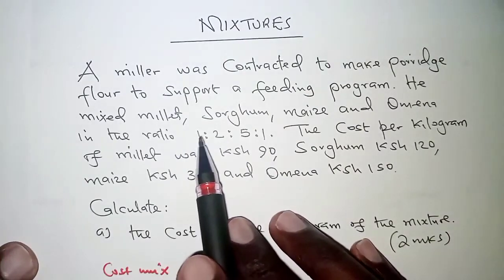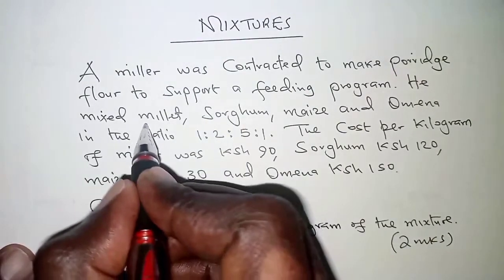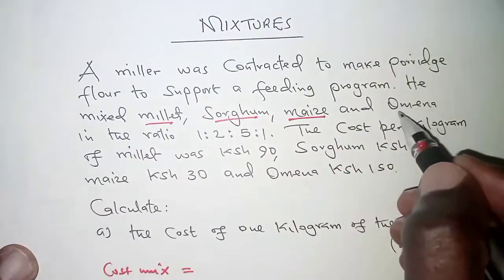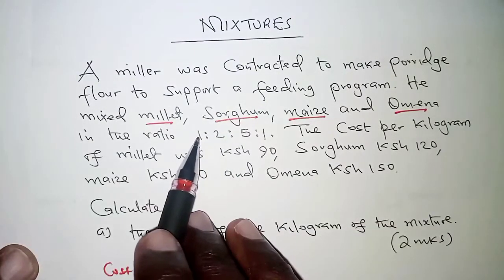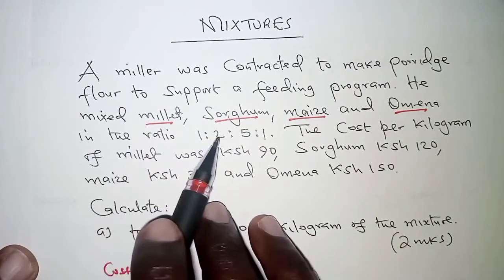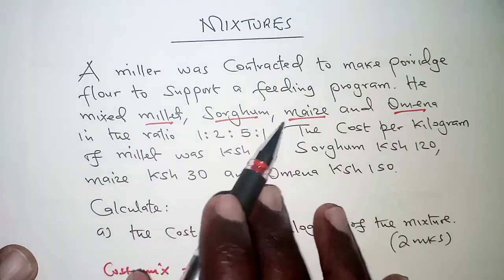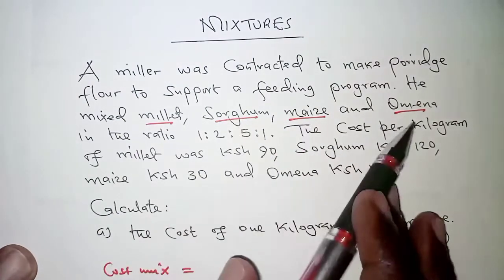Remember, we have millet to sorghum to maize to omena. So, 1 here represents the mass of millet, 2 represents the mass of sorghum, 5 maize, and 1 omena.